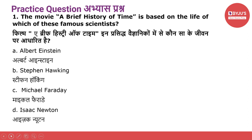Practice question number one: The movie A Brief History of Time is based on the life of which of these famous scientists? Option A: Albert Einstein. Option B: Stephen Hawking. Option C: Michael Faraday. Option D: Isaac Newton.